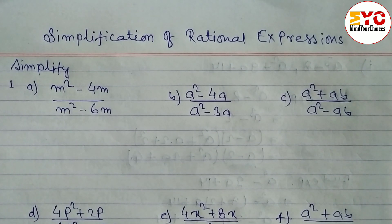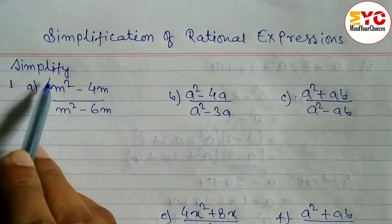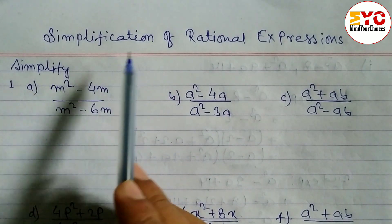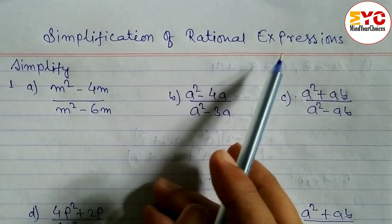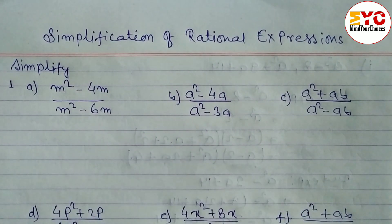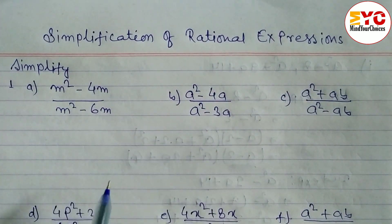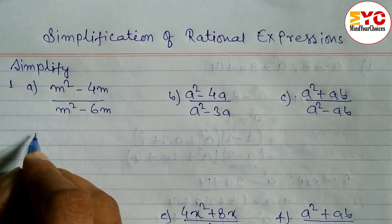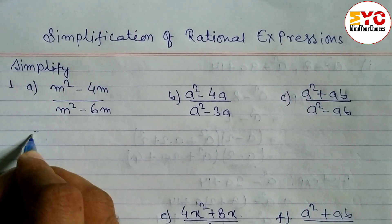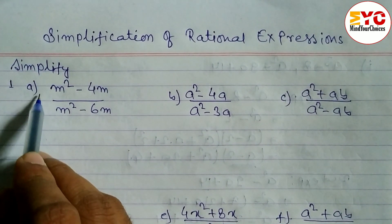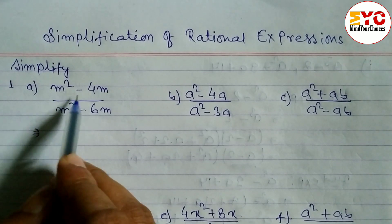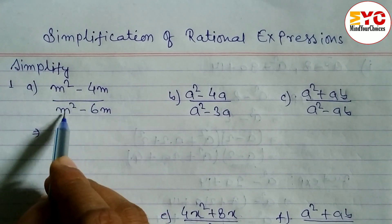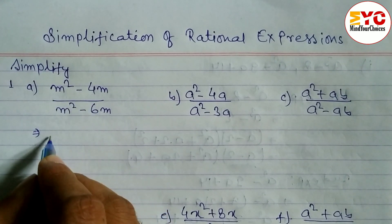In this video we are going to learn simplification of a rational expression. Here you can see we have a rational expression — total 6 questions — and I will show you how to simplify each one. Let's start. First of all, question number a: m squared minus 4m over m squared minus 4m.